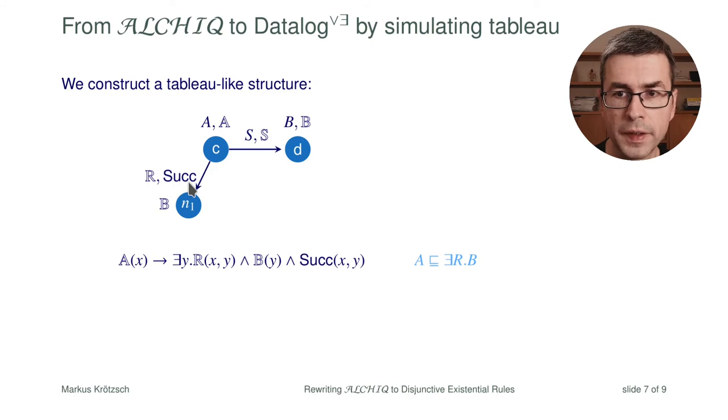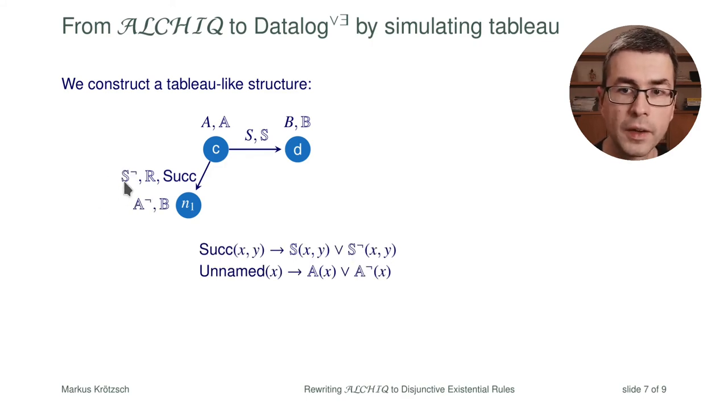We directly mimic the tableau mechanics in rules. We also have this additional predicate succ here which is the successor relation to keep the structure of the tableau in our model. After creating a successor we will also complete it in a certain way by essentially guessing the value of all possible classes and relations along this new part of the structure. We do this using disjunctions, simply saying if something is a successor then it has to be either in S or in S not.